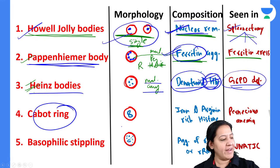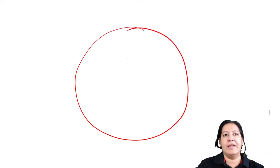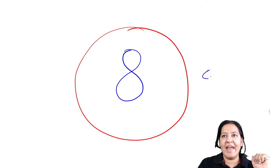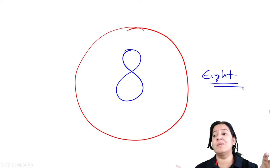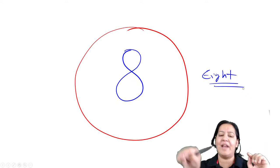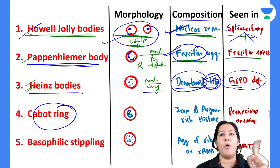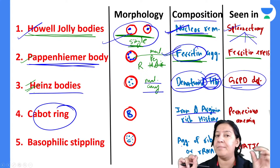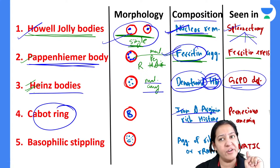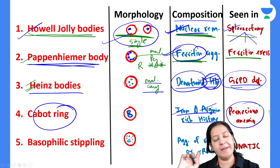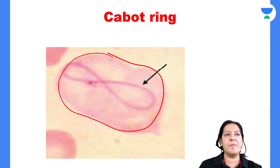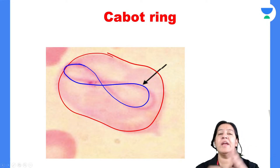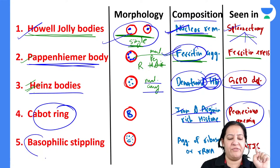Cabot ring: This is a ring-shaped structure that looks like the number eight — the mathematical figure '8'. It is very easy to identify because of this specific shape. It is seen in conditions with defects in iron metabolism and arginine-rich histone metabolism — most importantly in pernicious anemia. Can you see the RBC with the ring of eight? That is the Cabot ring.